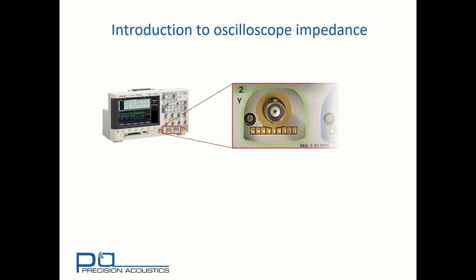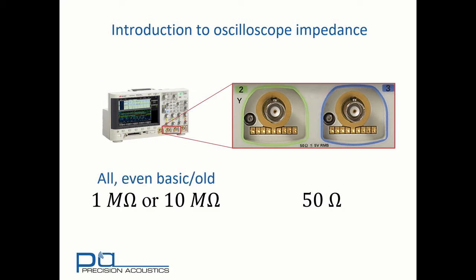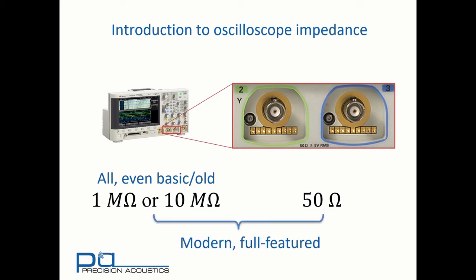If we look carefully by the input channels, we can see the oscilloscope impedance on this model is clearly listed as 50 ohms. There are often two options available: high impedance, which is 1 megaohm or 10 megaohms, and 50 ohms impedance. Even basic or old oscilloscopes will support the 1 megaohm or 10 megaohm high impedance option, whereas it tends to be only more modern, fully featured devices that will allow you to switch between high impedance and 50 ohm impedance.